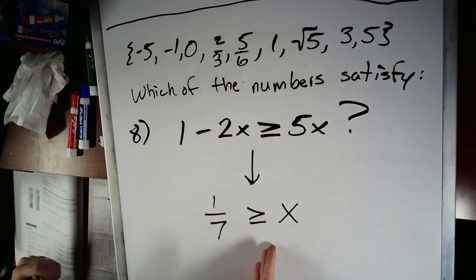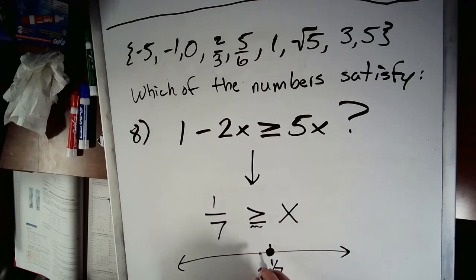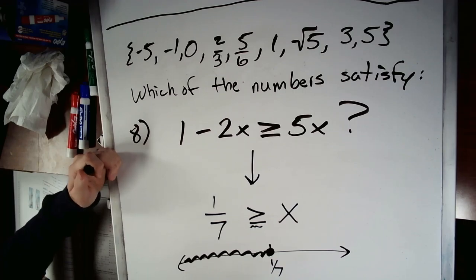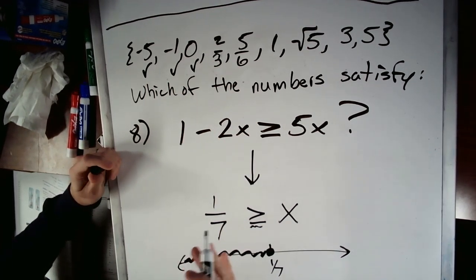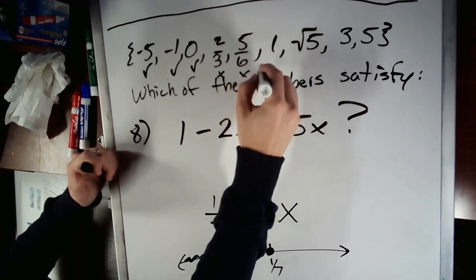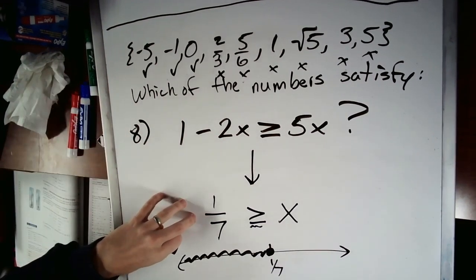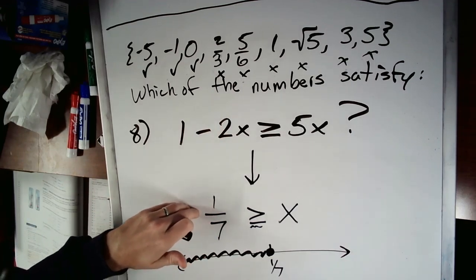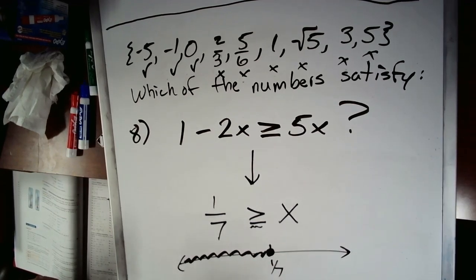Any number smaller than 1 seventh or equal to 1 seventh works. On a number line, we have 1 seventh somewhere, we can include it because of the equality. So x is less than or equal to 1 seventh — anything less than or equal to 1 seventh works. Going through our list: the negatives are definitely less than that, zero is definitely less than that. And then all the remaining numbers in the list are all bigger than 1 seventh, so none of those work. This checking of the list is super fast once you've solved the inequality — just two steps to get the solution.